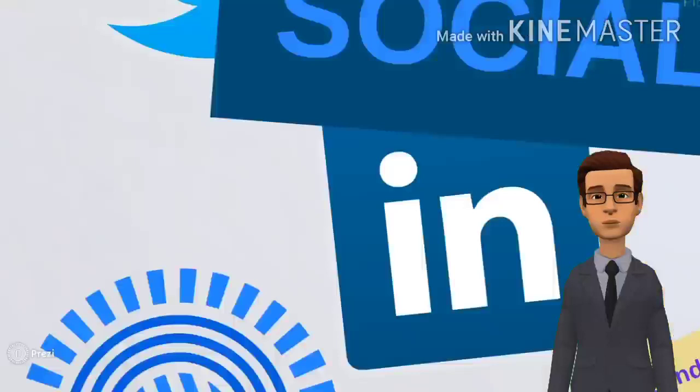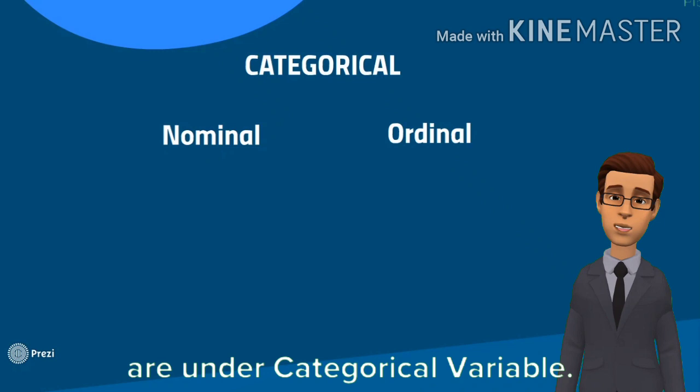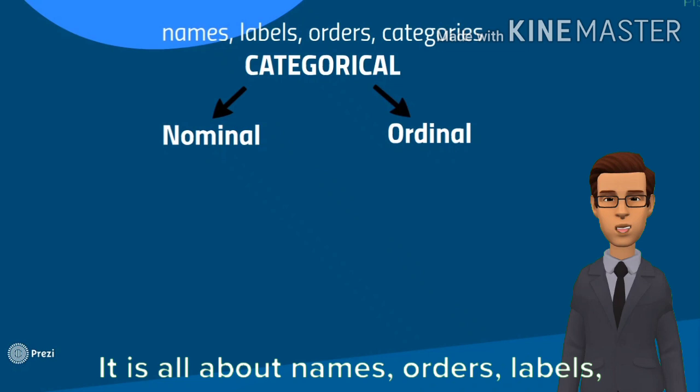Please do note that nominal and ordinal are under categorical variable. It is all about names, orders, labels, or category.